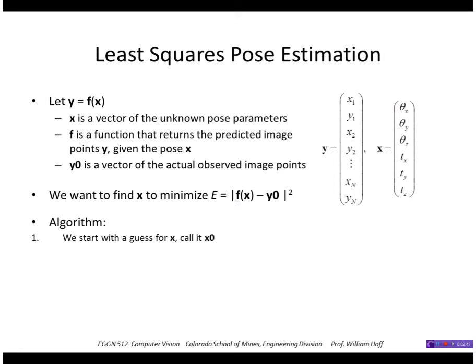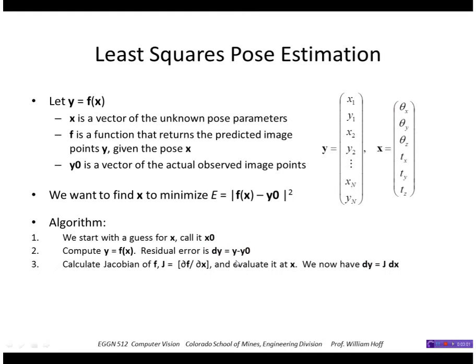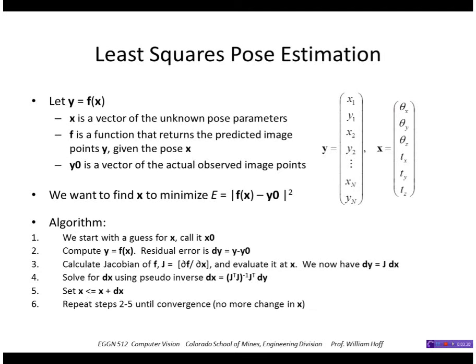The algorithm is the usual iterative least squares algorithm. We start with a guess for x, compute the predicted points at that pose x, compute the residual error, compute the Jacobian of the function f evaluated at the current pose x, and now solve the system of linear equations dy equals J dx using the pseudo inverse. Then correct the guess for the pose by adding that correction to it and iterate until there's no more change in x.